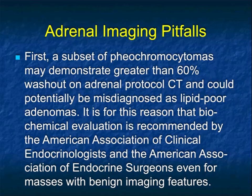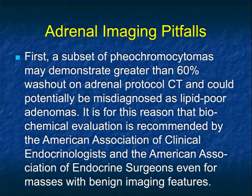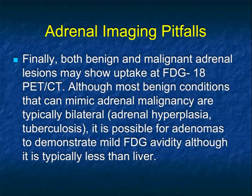When speaking about pheochromocytoma, because pheos are often very vascular, they can have a sharp washout value of 60 to 70% and be confused with an adenoma, at least in theory. But the key thing is adenomas don't reach 120 Hounsfield units, and typically pheos are much higher. If you suspect a pheo, different lab values can be ordered - and that is indeed what will be done.